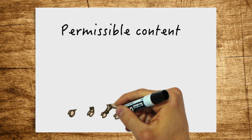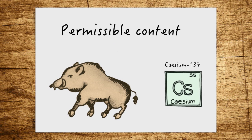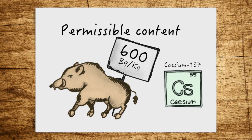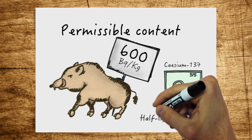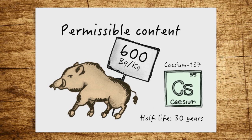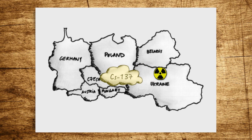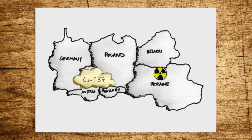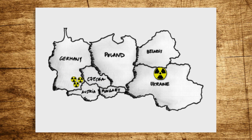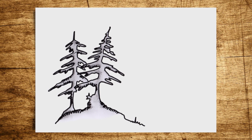By the way, did you know that the limit for cesium-137 in wild boar is 600 Becquerels per kilogram? This radioactive material can be relatively easily transported by air and has a half-life of about 30 years. The Chernobyl accident in 1986 resulted in the release of radioactive material, in particular cesium-137, which reached Europe through the atmosphere. In Germany, this substance has mainly been deposited on soils in the Bavarian forest.